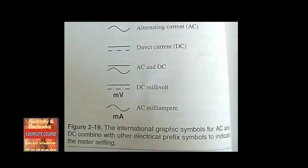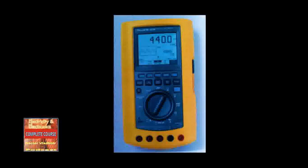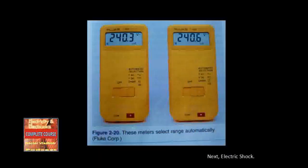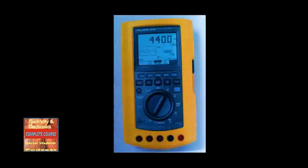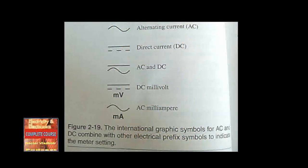Most digital meters use international standard labels to indicate various meter functions, such as AC and DC symbols combined with metric prefixes to identify the function or range of a meter setting. Many DMMs are equipped with protective circuitry to prevent accidental damage when the wrong function is used. Polarity is usually not an issue with digital meters — the meter will automatically adjust and flash a message on the LCD warning the user. Some digital meters have an auto-range feature that automatically selects the range through internal electronic circuitry. Resistance reading using a DMM still requires disconnecting the circuit from the power source to prevent damage.